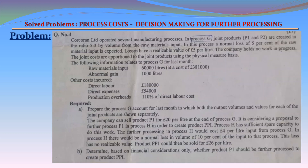The following information relates to Process G for last month. Raw material input: 60,000 liters at a cost of £381,000. Abnormal gain: 1,000 liters. Other costs incurred — Direct labor: £180,000; Direct expenses: £54,000; Production overheads: 110% of direct labor cost.